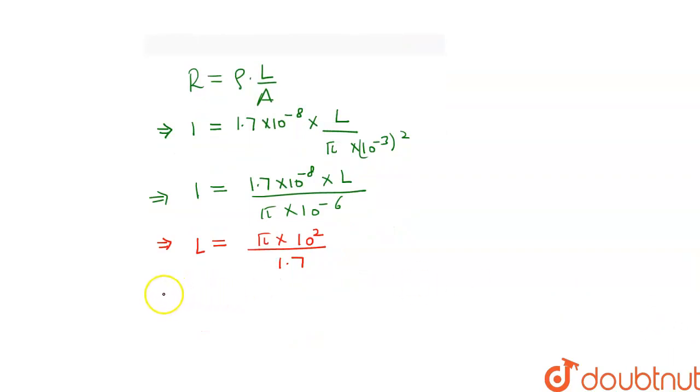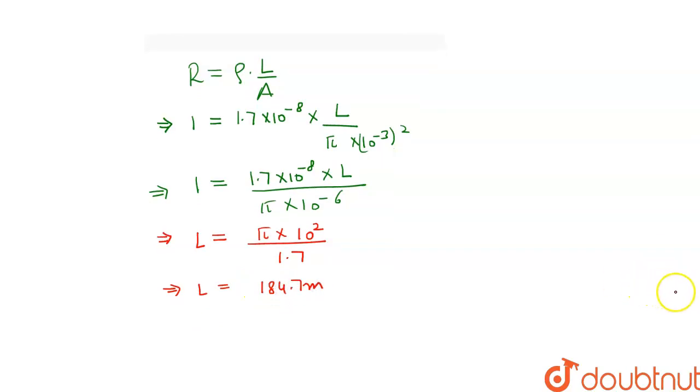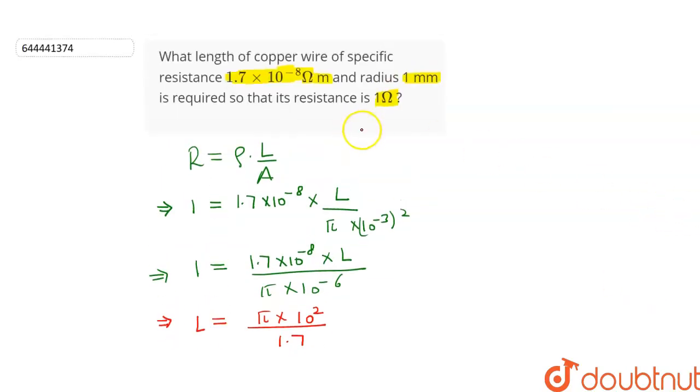So the length of copper wire required so that its resistance is equal to 1 ohm is equal to 184.7 meters. Thank you.